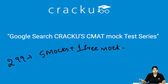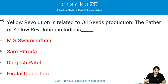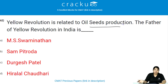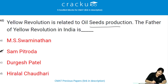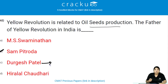Yellow Revolution is related to oil seeds production. The father of Yellow Revolution is Sam Pitroda, and Durgesh Patel is the father of Pink Revolution.